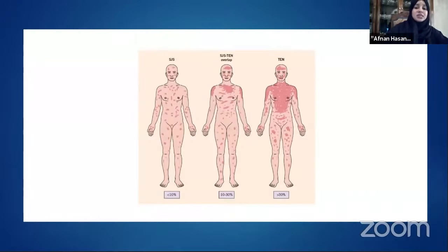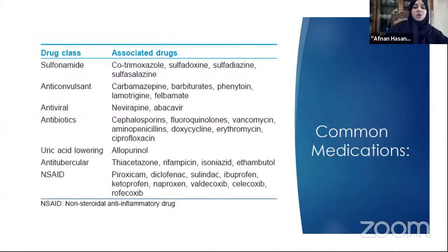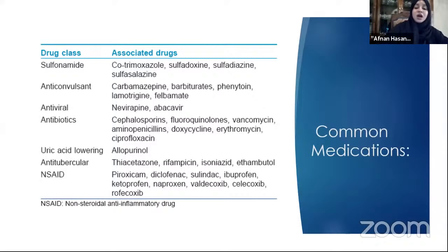SJS is less than 10%, TEN is more than 30%, and SJS-TEN overlap is 10-30%. The most common drug classes are sulfonamides — dermatologists do not like Bactrim or any sulfur-containing antibiotic. In our patient it was sulfasalazine. Other culprits include sulfadiazine, sulfadoxine, co-trimoxazole, anticonvulsants such as carbamazepine, barbiturates, phenytoin, lamotrigine, felbamate, antivirals such as nevirapine and abacavir, other antibiotics such as cephalosporins, vancomycin, quinolones, doxycycline, erythromycin, uric acid-lowering agents like allopurinol, anti-TB agents such as rifampin, isoniazid, ethambutol, and NSAIDs.